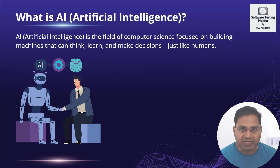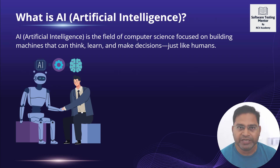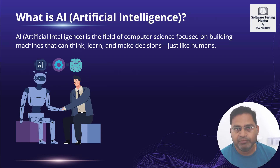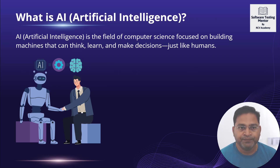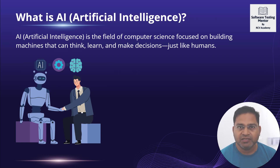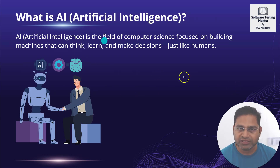The field of computer science is trying to replicate similar intelligence or mechanisms in machines so they can learn, become intelligent, and help us in ways similar to how we get help from other human beings. As humans, we have a brain that analyzes surroundings and learns from what we were taught. Machines don't have that natural ability, so AI helps us embed an artificial ability to learn within them.